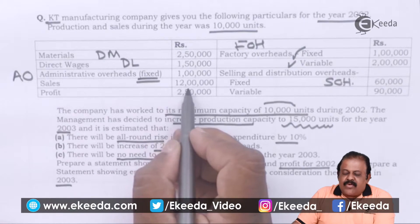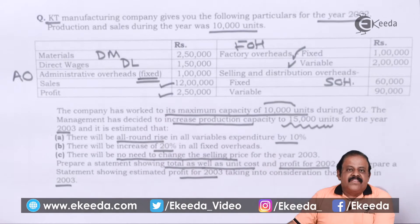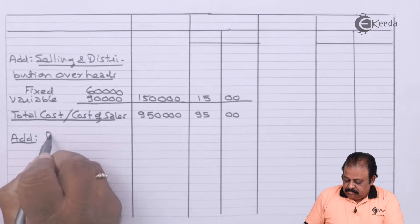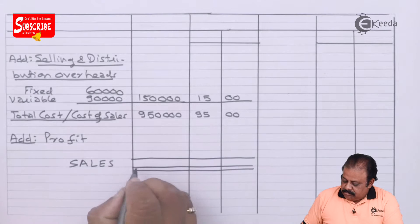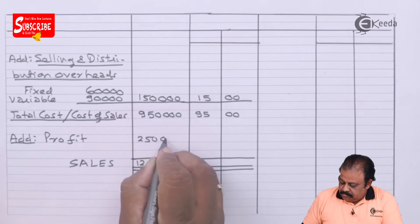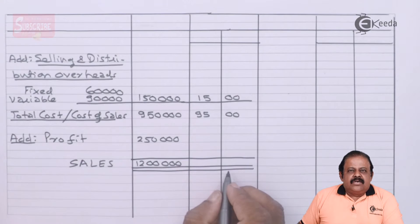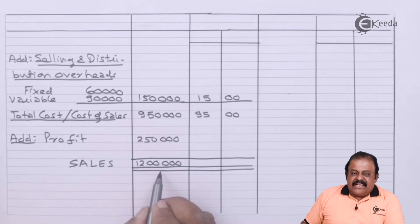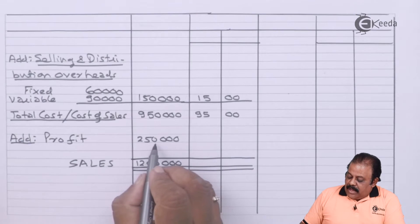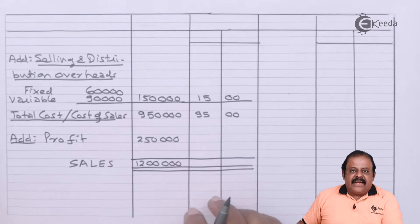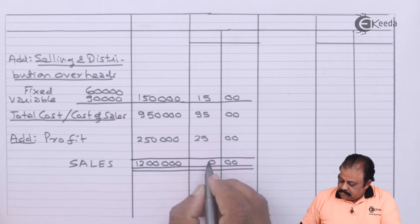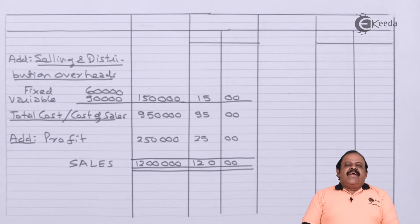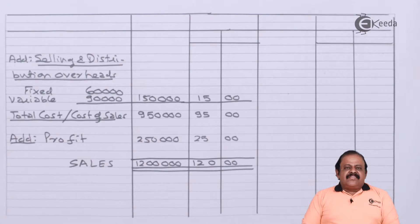Sales are given as ₹12,00,000 and net profit is ₹2,50,000. Profit ₹2,50,000 is added to total cost to arrive at sales ₹12,00,000. Per unit profit: ₹2,50,000 divided by 10,000 units equals ₹25 per unit. The selling price per unit is ₹120.